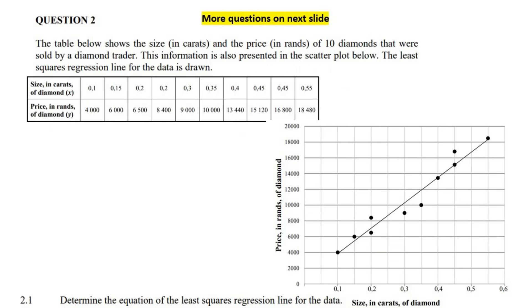Okay, so here we have this question. Look carefully, there is the question at the bottom. The table below shows the size in carats - remember we're not talking about vegetables, we're talking about carats as in carat diamond, the bling bling. The table shows the size in carats and the price in rands of 10 diamonds that were sold by a diamond trader. Here are the 10 diamonds, and they've also given us a scatter plot with the same data. This information is also presented in the scatter plot.